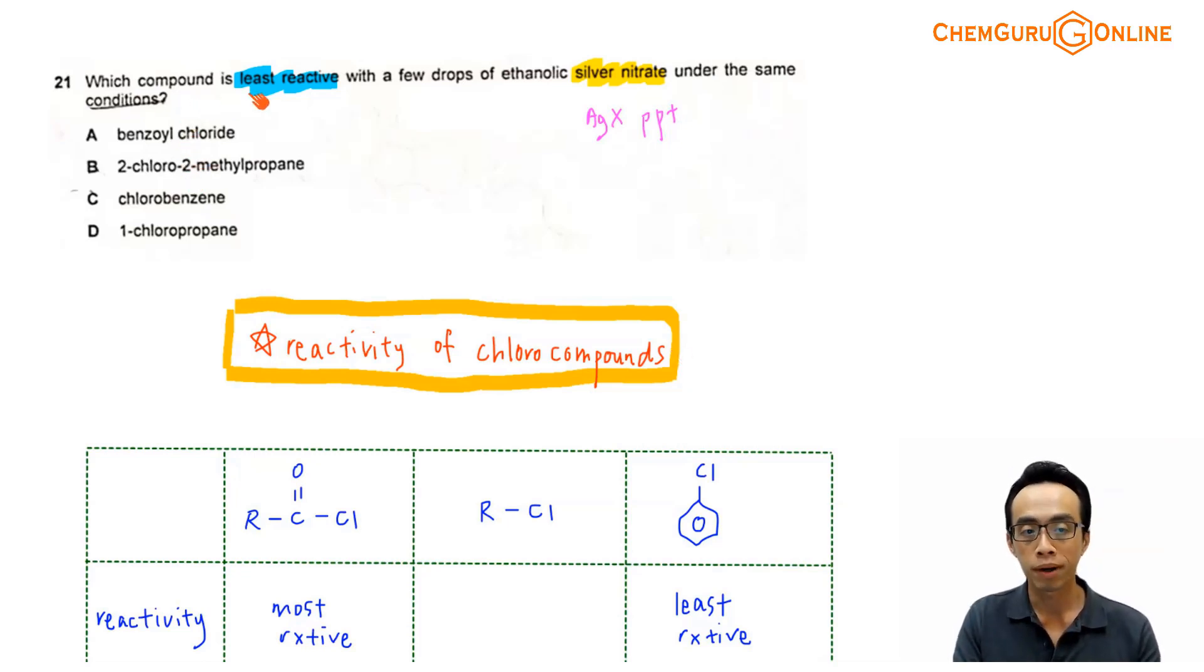Question 21, which compound is least reactive with a few drops of ethanolic silver nitrate under the same conditions? The purpose of adding silver nitrate in general is to try to precipitate our halide, silver chloride, silver bromide, silver iodide. I have 4 compounds here: benzoyl chloride for option A, 2-chloro-2-methylpropane for option B, chlorobenzene option C, 1-chloropropane option D.